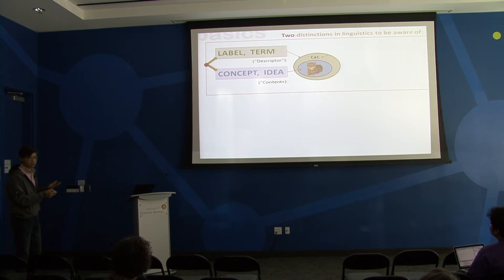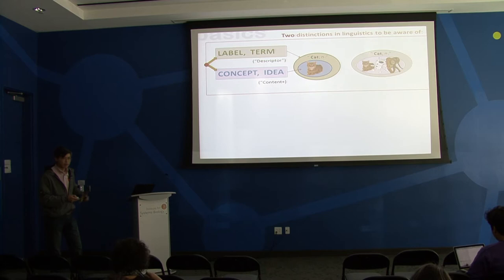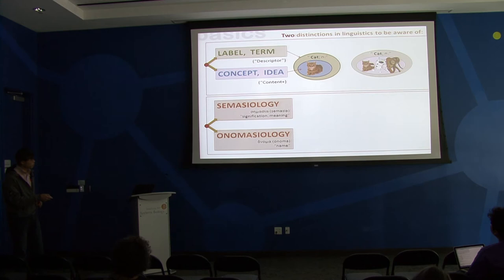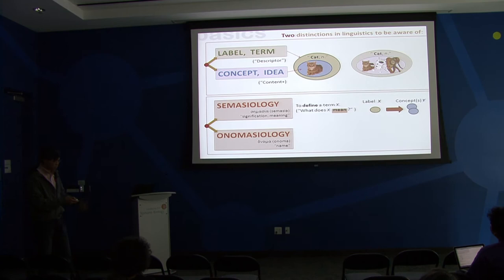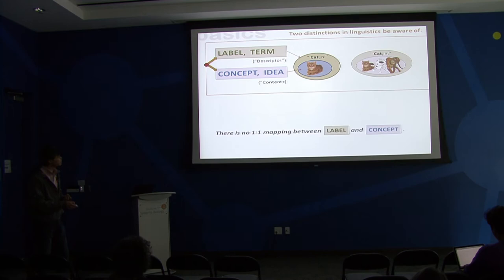A concept - for example 'cat' - everybody knows what it is: a natural concept. We have a label for that, but it can also mean other things. There's a deeper relationship between label and concept, and that is where these mysterious words in the title come from: semasiology and onomasiology. Semasiology from ancient Greek - 'semacia' means meaning - and onomasiology comes from 'onoma' meaning name. In semasiology we're interested in defining something: I give you a term, a label, and ask you to define it. You start with a given label and want to know what concepts are behind it. In onomasiology it's the opposite: you start with a concept and want to label it - the question is how should we name it.